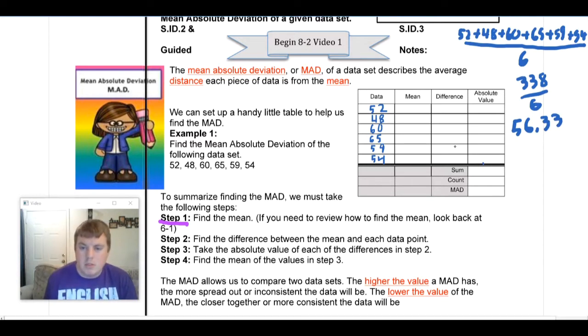So what I'm going to do now is just fill that into my table where it says 'mean'. And it's just going to be the same thing all the way down. So I'm just going to put 56.33, 56.33, and so forth. And I'm just going to take a minute to do that.